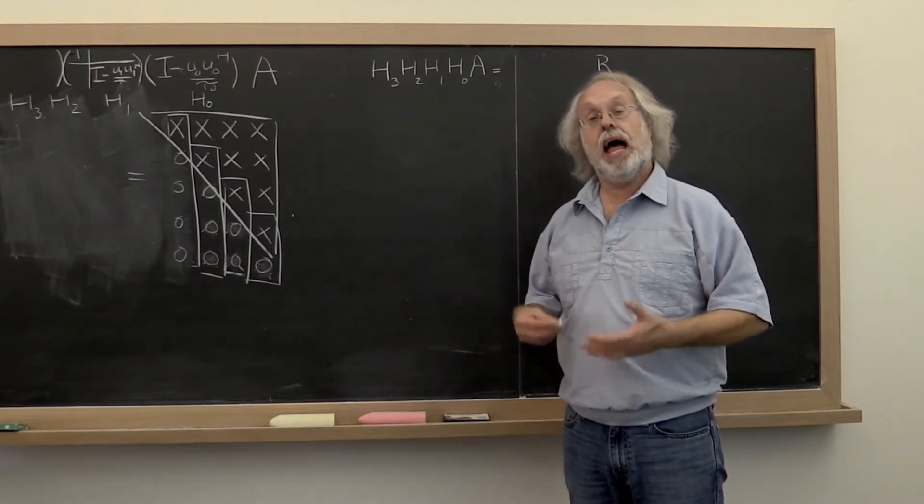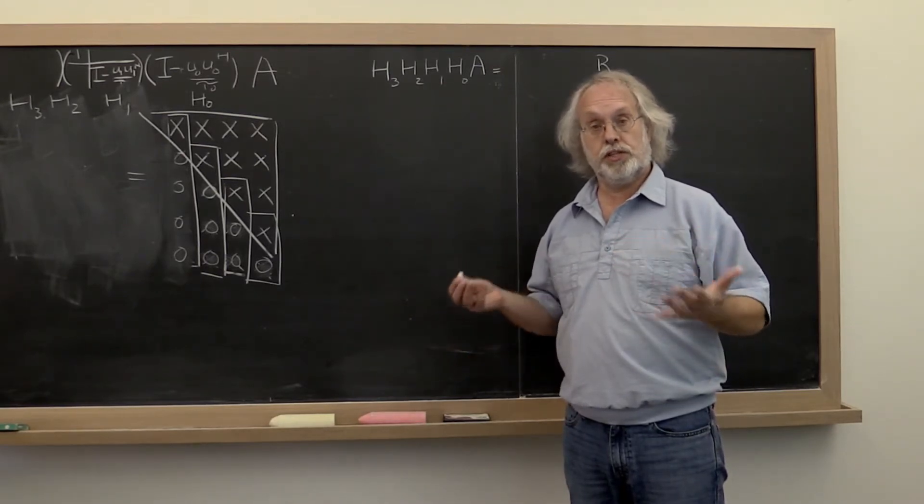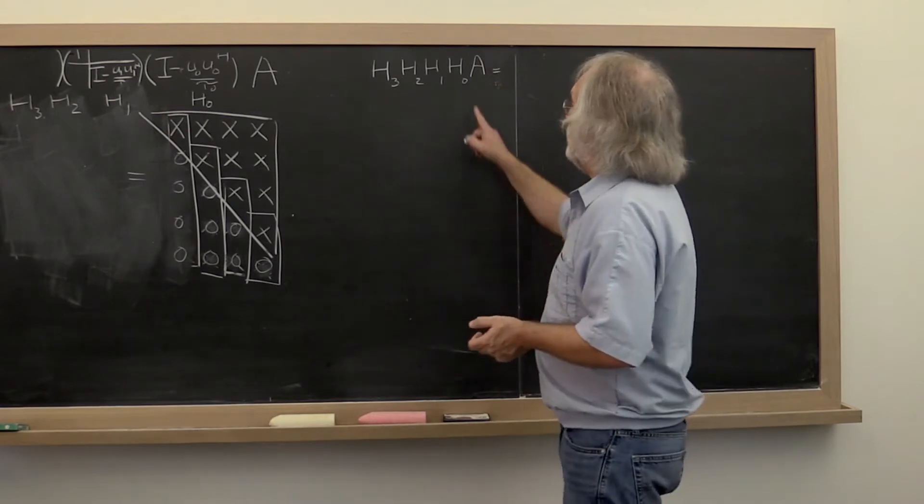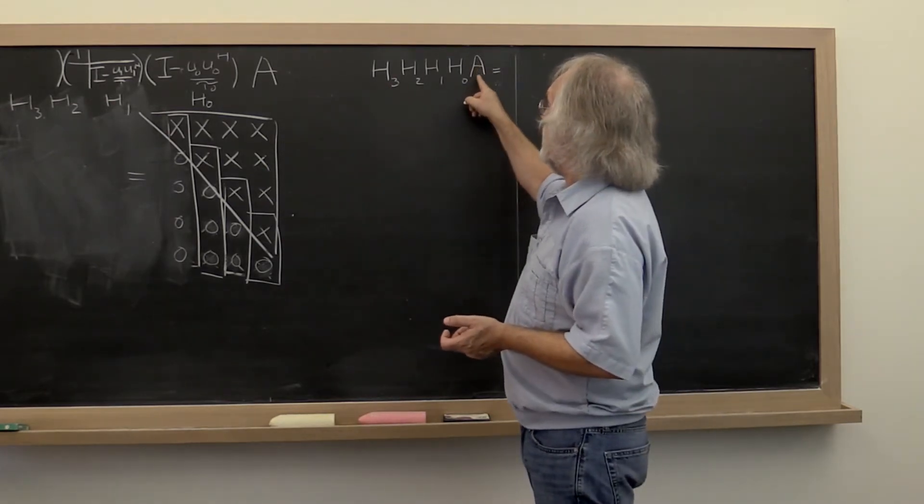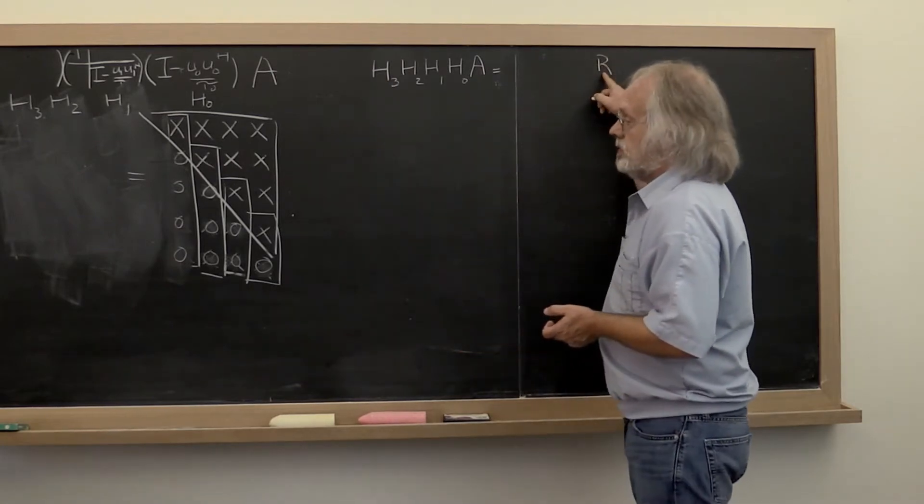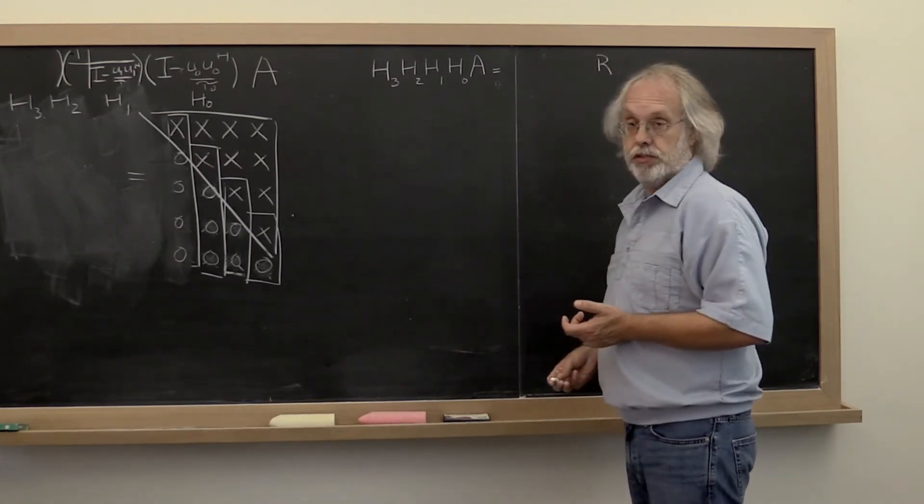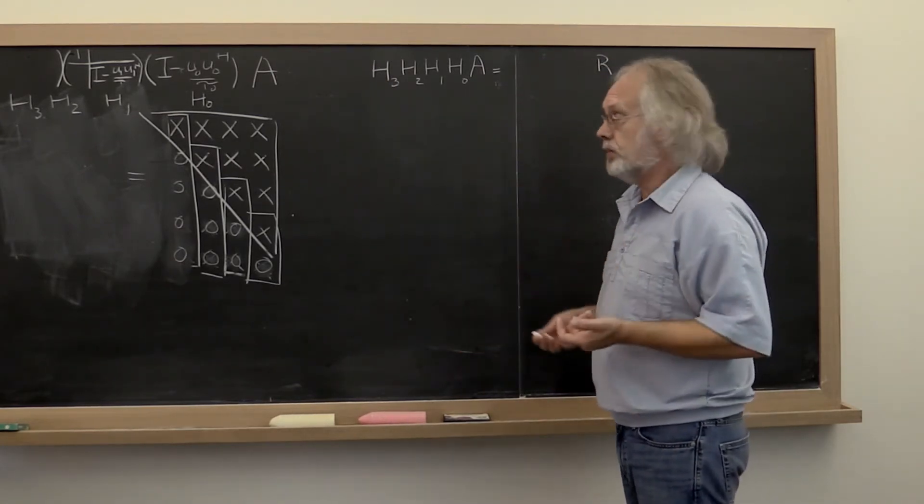The next question is, how do we compute matrix Q? Notice what we have now is a bunch of unitary matrices, such that if you multiply them times A, you get this upper triangular matrix, or upper trapezoidal matrix.